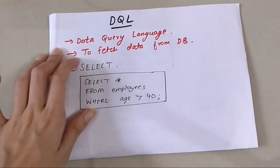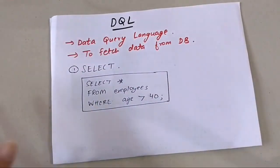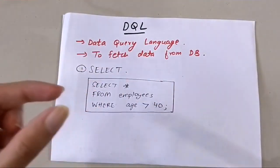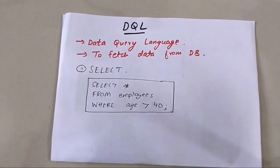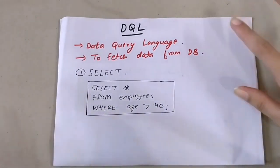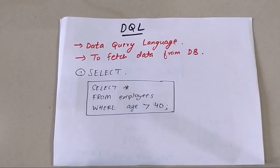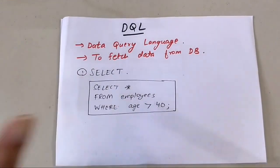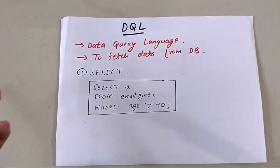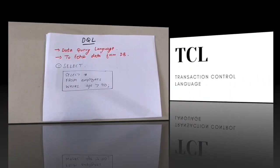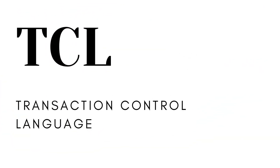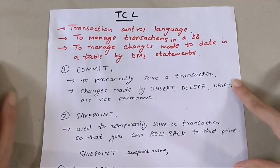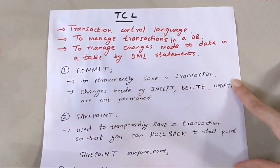DQL stands for Data Query Language. It is used to fetch data from the database. There is only one command in DQL and that is SELECT. For example: SELECT * FROM employees WHERE age > 40.